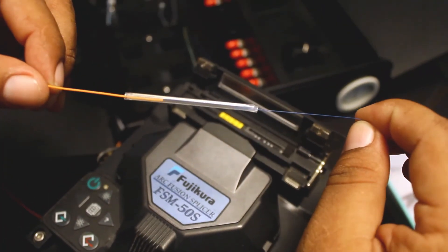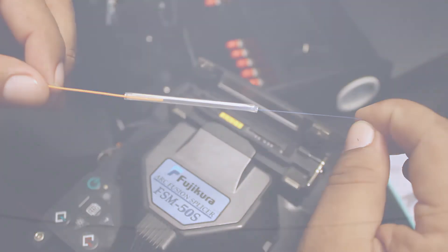Place the heat shrink into the splice clips according to the way you arranged your fibers. Repeat the process with the remaining fibers and you're done.